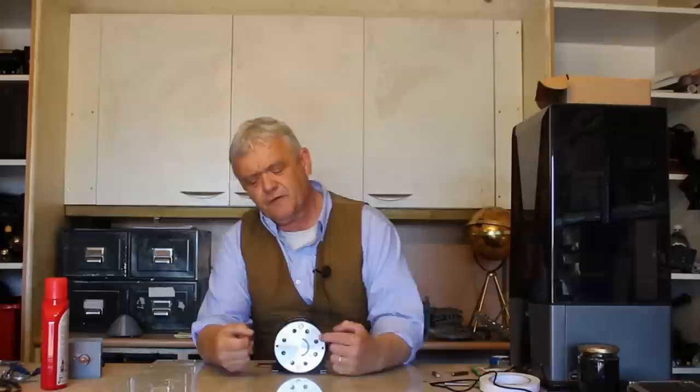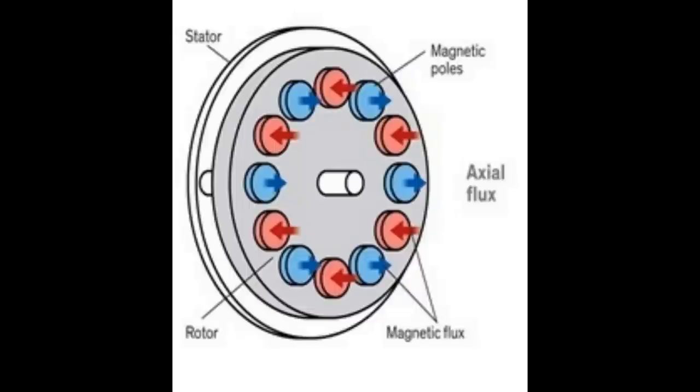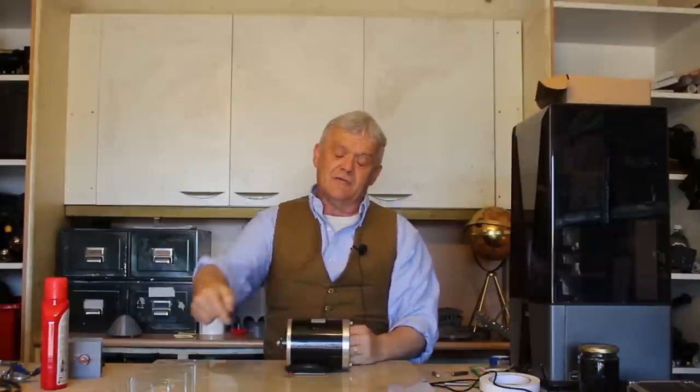Now this particular kind is called a radial flux device. It's called radial flux because the flux, the lines of magnetic force, follow the radius. They go around that way. And of course there is a new kid on the block and that new kid is axial flux. Axial flux is because the flux goes that way, parallel to the axis.